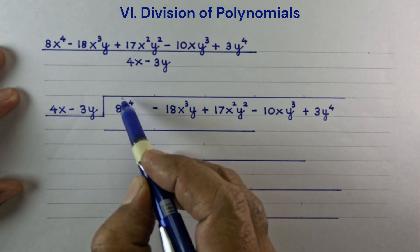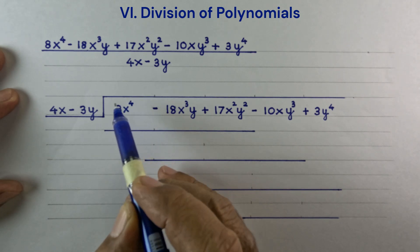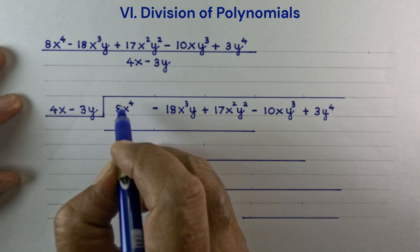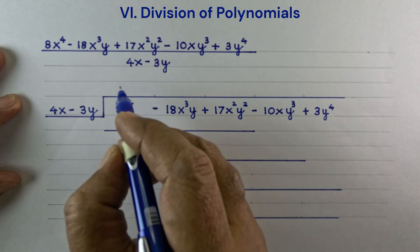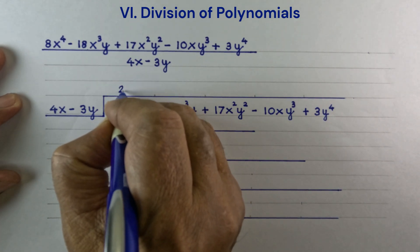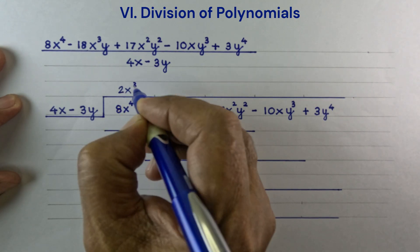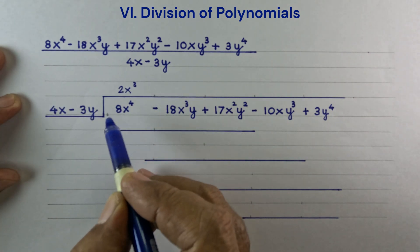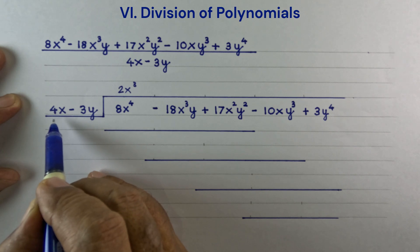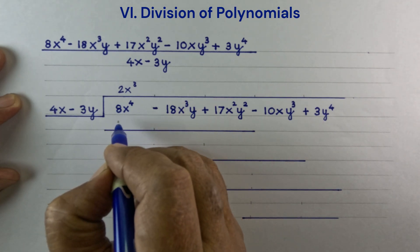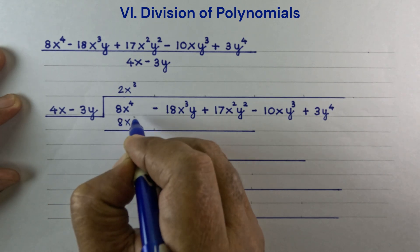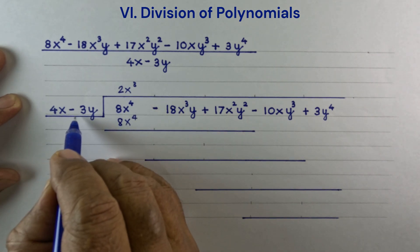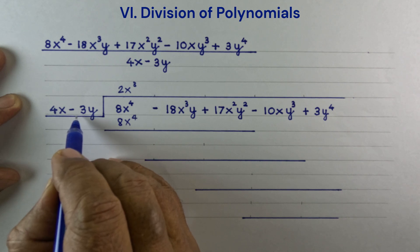First step is we will divide the first term of the dividend by the first term of the divisor. So 8x to the 4th divided by 4x is 2x cubed. Now, 2x cubed times the divisor: 2x cubed times 4x is 8x to the 4th, and 2x cubed times minus 3y is minus 6x cubed y.